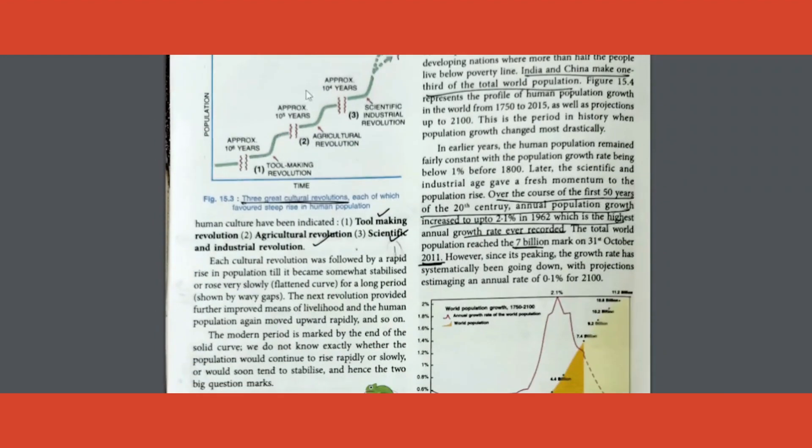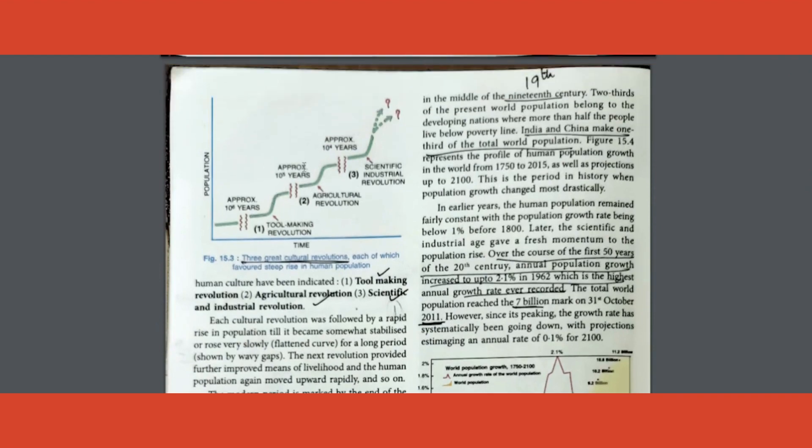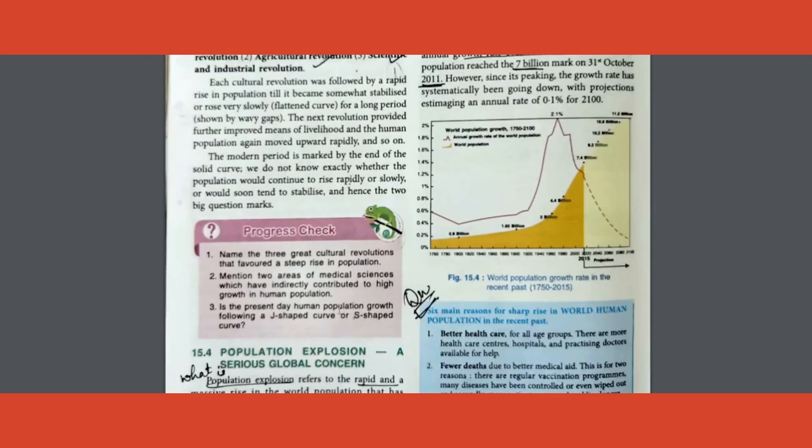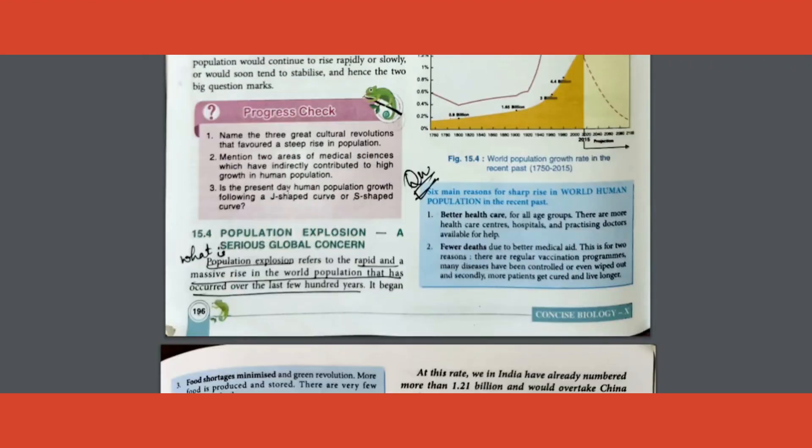Going ahead, three great cultural revolutions or three great sudden increases in population happened. What were the reasons? One is tool making, another is agriculture, another is scientific and industrial revolution. You can understand that with all these there will be a sudden increase in population. These three pointers you are learning.